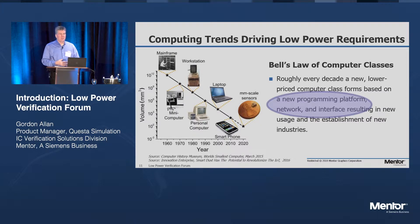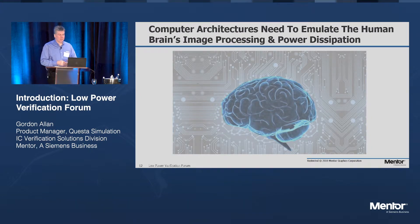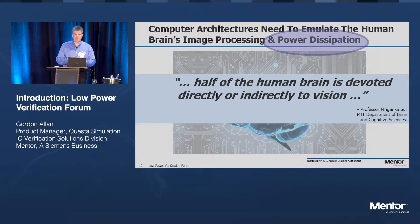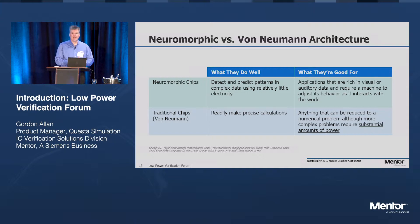Every generation of compute typically has a new approach to power consumption. What we're approaching is the compute capabilities of the human brain, which is an exceptionally efficient computer in terms of power. Half of the human brain is devoted directly or indirectly to vision. It's always on — like many of the devices we're designing for — and always on means always consuming power. Our architectures of the future need to emulate the capabilities of the brain, and looking at different compute architectures to solve different classes of problems is one way to optimize.